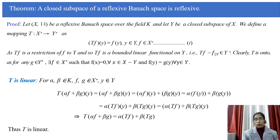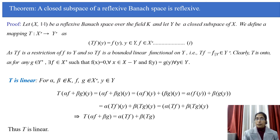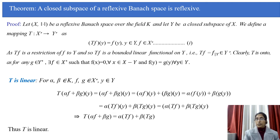We define a mapping T from X* to Y* as T(f)(y) = f(y) for every y in Y and for every f in X*. Since we are defining a mapping from X* to Y*, T(f) must be an element of Y*. That means T(f) is a mapping from Y to K, and T(f) is a bounded linear functional on Y. For each y in Y, T(f)(y) = f(y), and since f maps X to K and Y is a subset of X, f(y) is an element of K. So T(f) maps every element of Y to an element of K.